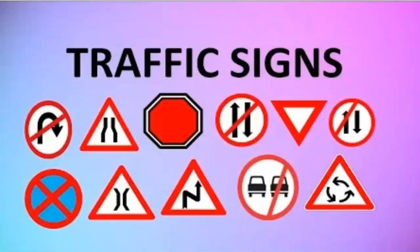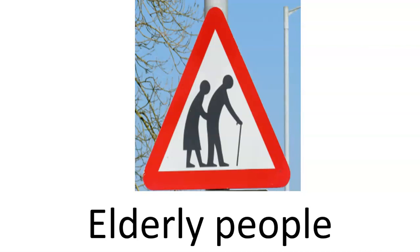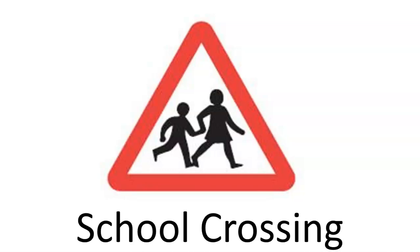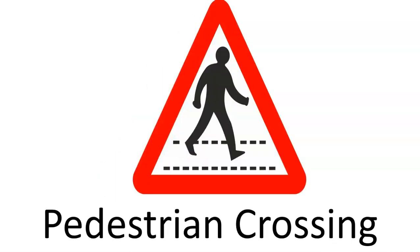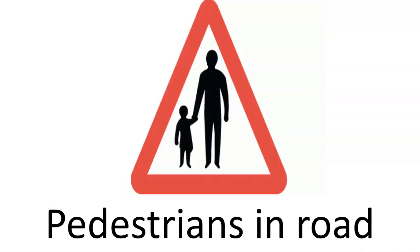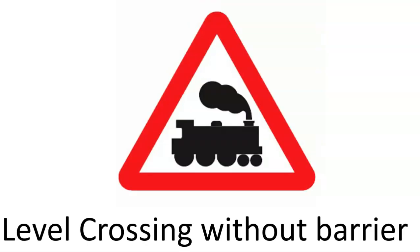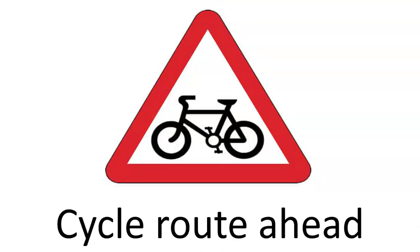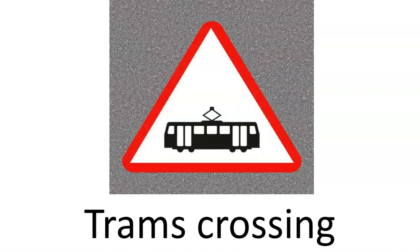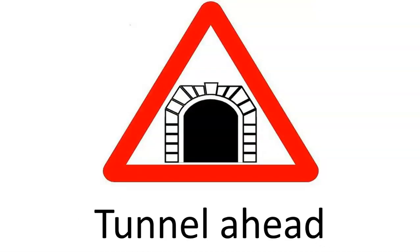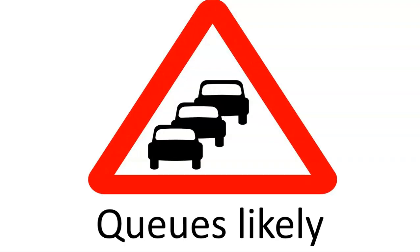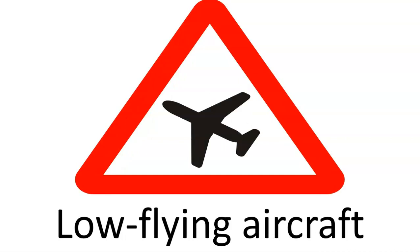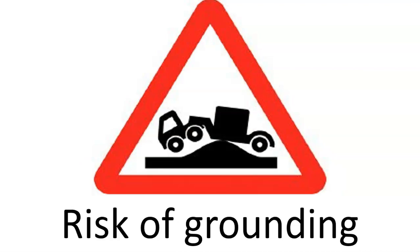Now children, let us learn about some of the traffic signs and their meanings. Elderly people crossing, school crossing, pedestrian crossing, pedestrian in road, level crossing without barrier, level crossing with barrier, cycle route ahead, ramps crossing, tunnel ahead, low flying aircraft, risk of grounding.